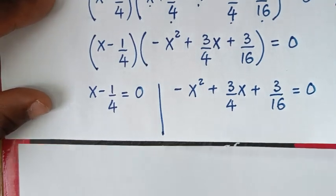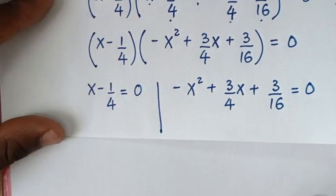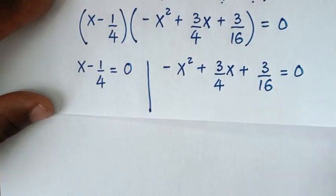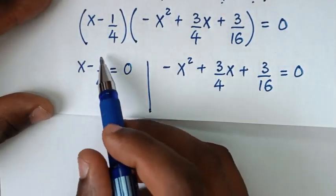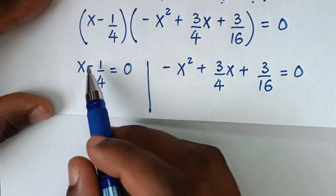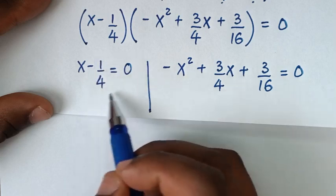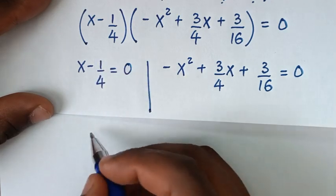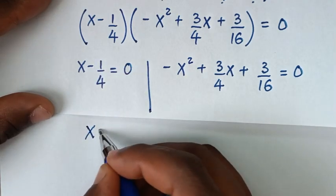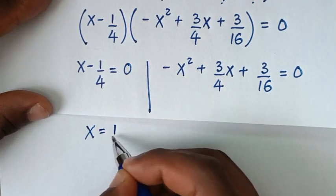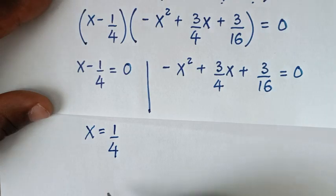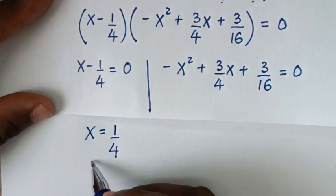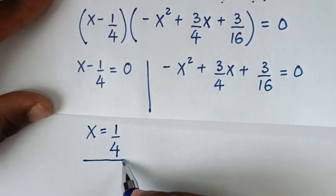From the first solution, moving negative 1 over 4 to the other side gives x equals 1 over 4. So this is the first solution of x.